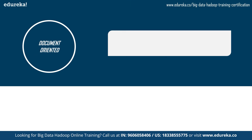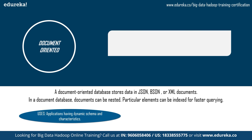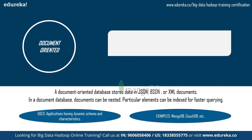A document database stores data in JSON, BSON, and XML documents. In a document database, documents can be nested and particular elements can be indexed for faster querying. Document databases make it easier for developers to store and query data using the same document model format they use in their application code. These databases are used for applications with dynamic schemas. Examples include MongoDB and Couchbase, with MongoDB being the most popular NoSQL database.